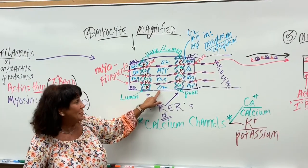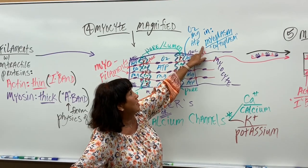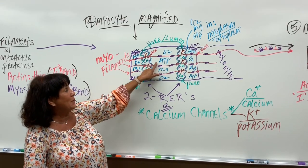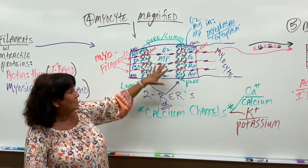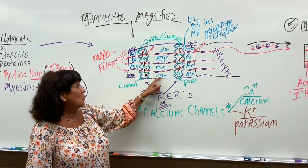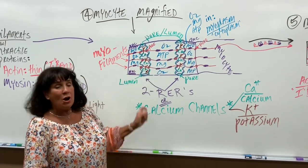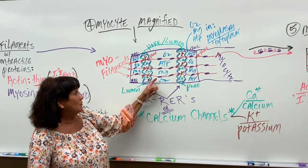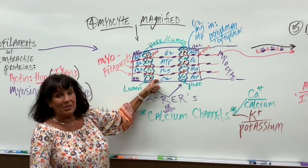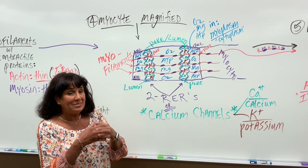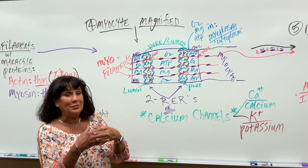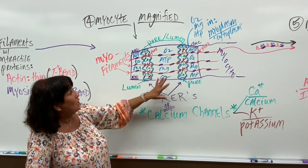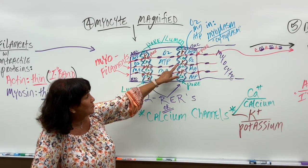In the cytoplasm, which is also called myoplasm or sarcoplasm, we have oxygen, magnesium, and ATP dissolved in that cytoplasm. Those three things are absolutely necessary to make muscle cells relax. If you don't have these big three, then your muscle cells are going to stay contracted, and that is not good - that's called cramping or even a heart attack.